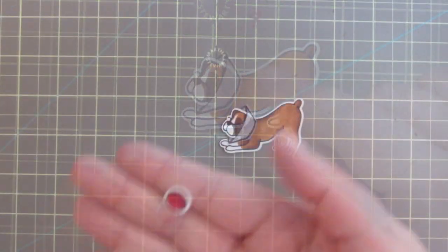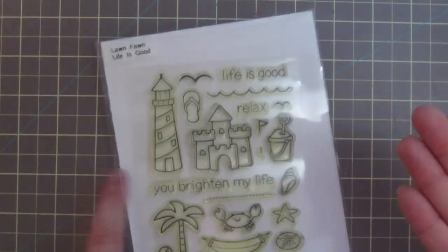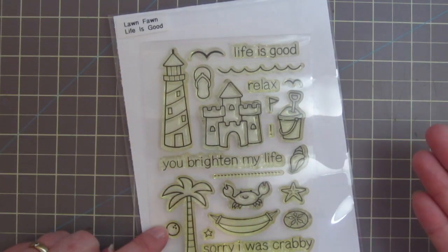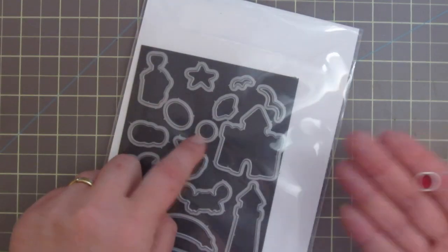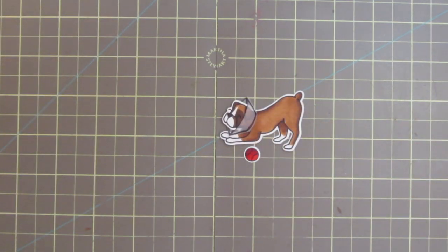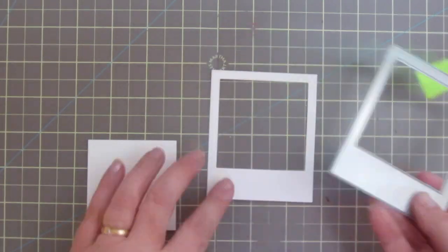By the way there is no die to match the little tennis ball from Critters at the Dog Park but there is a die for the coconut from Life is Good that is the exact same size and works perfectly. Just a quick tip for you.